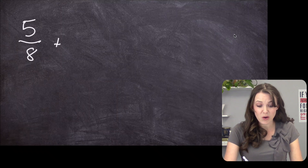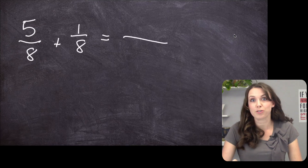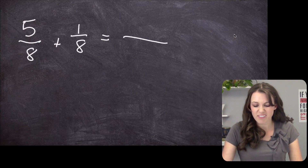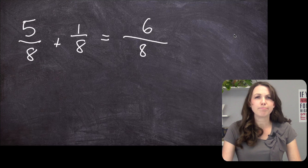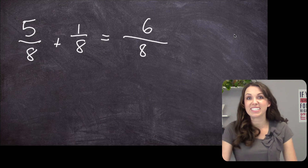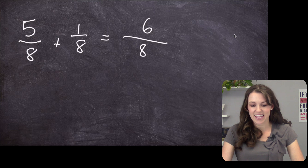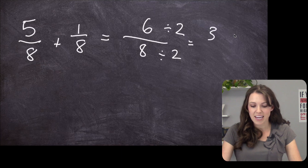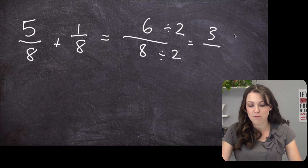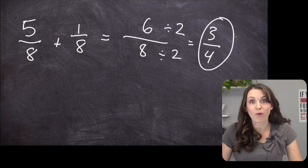Five over eight plus one over eight — the denominator, which is the number on the bottom, is the same, so we don't really have to do anything else to it. We just keep the eight on the bottom, and then five plus one equals six. But is there a number that goes into both six and eight? Yes, that number is two. So we divide the top and the bottom both by two: six divided by two is three, and eight divided by two is four. So our answer is three quarters.